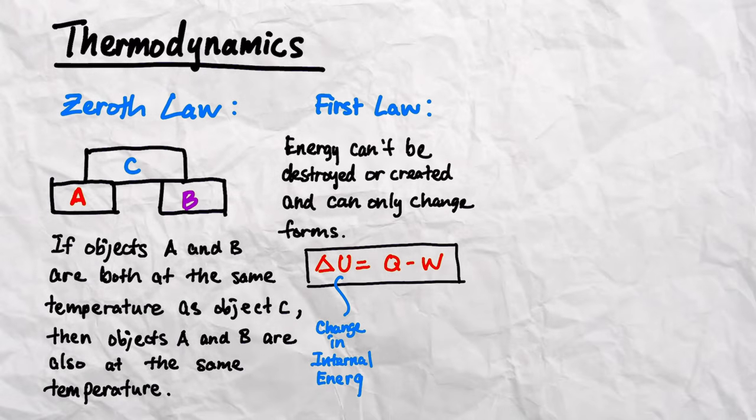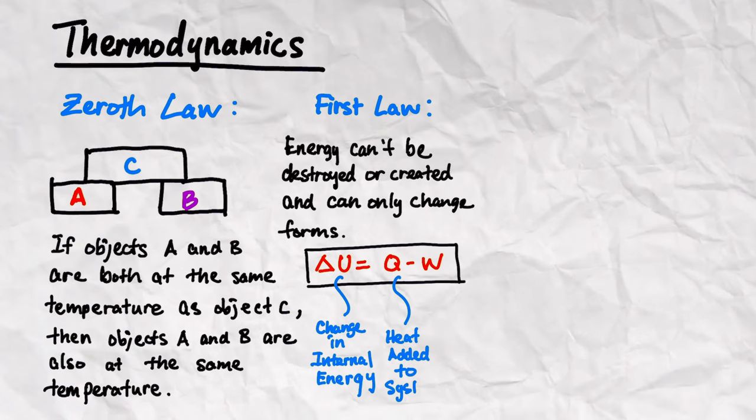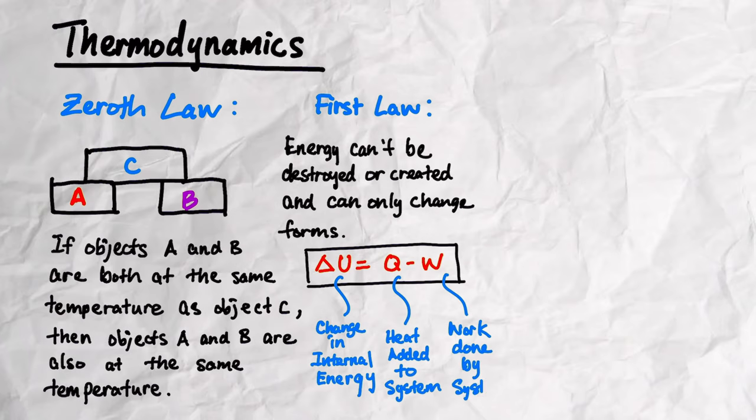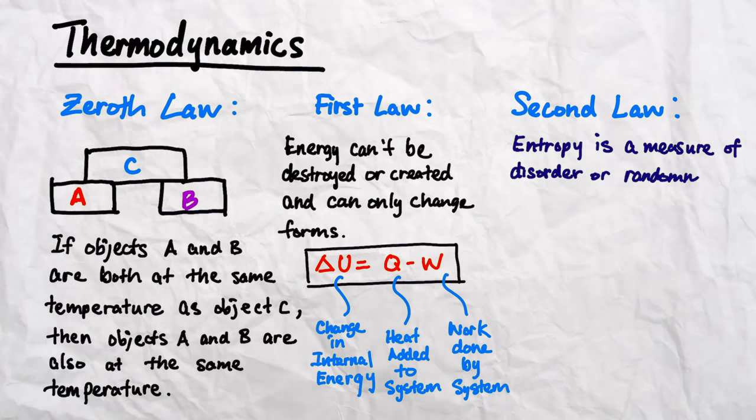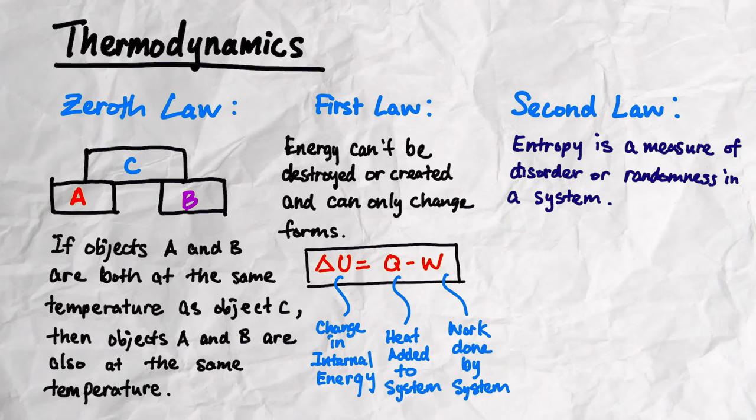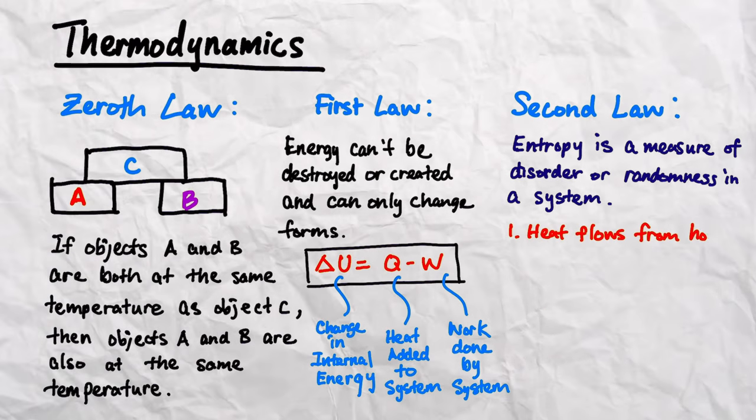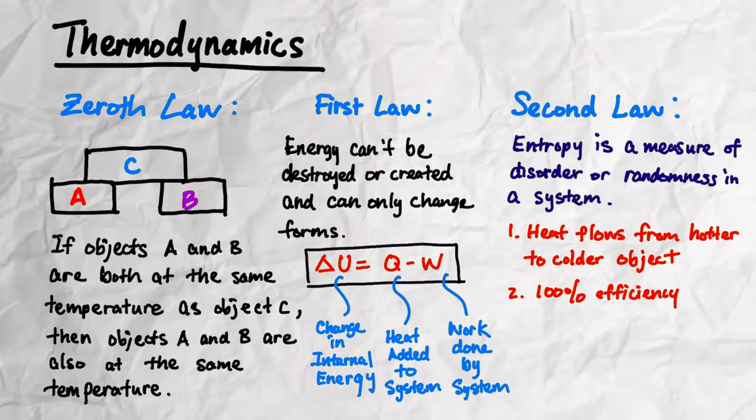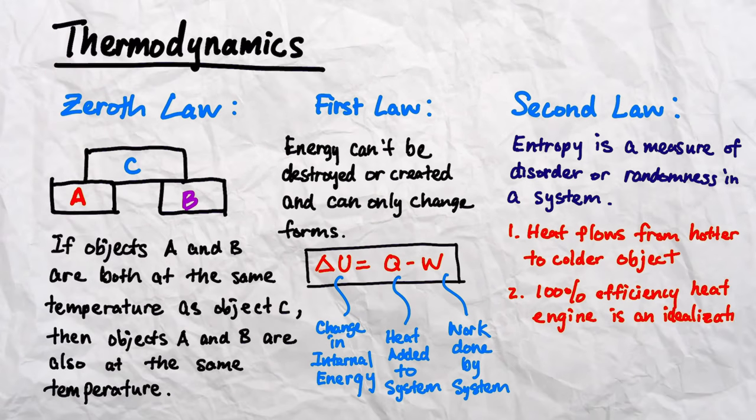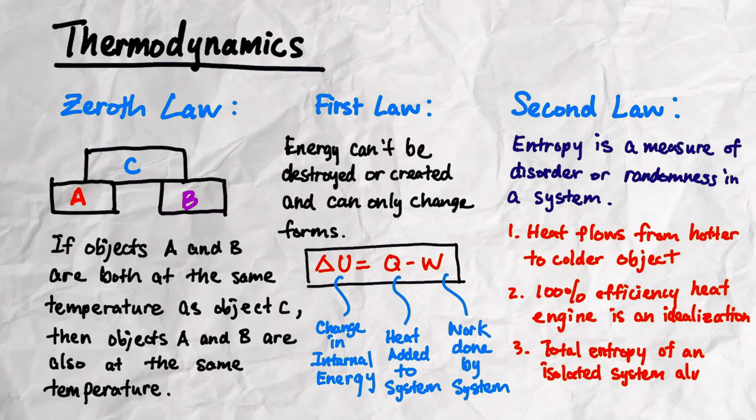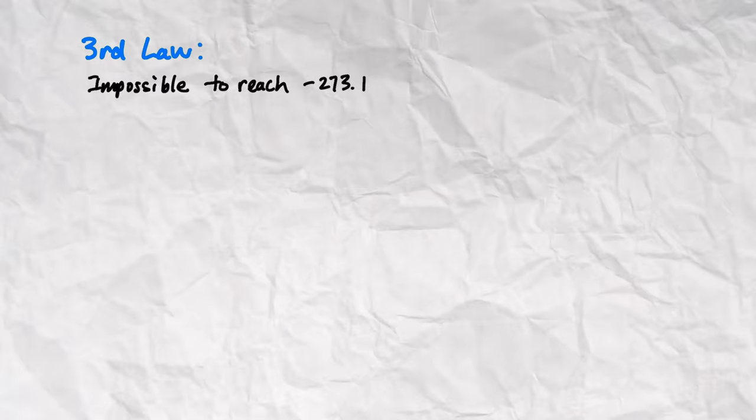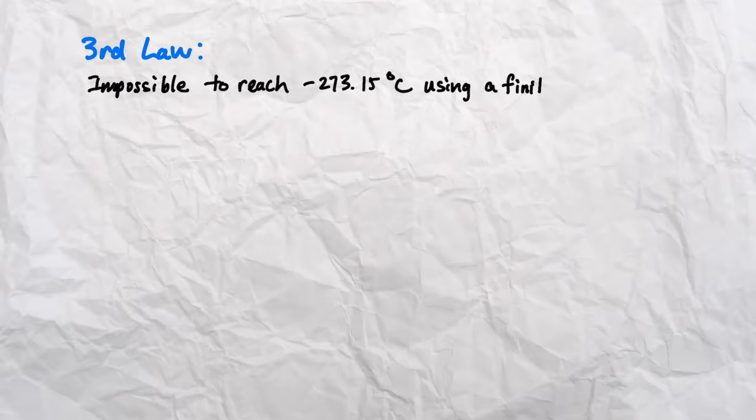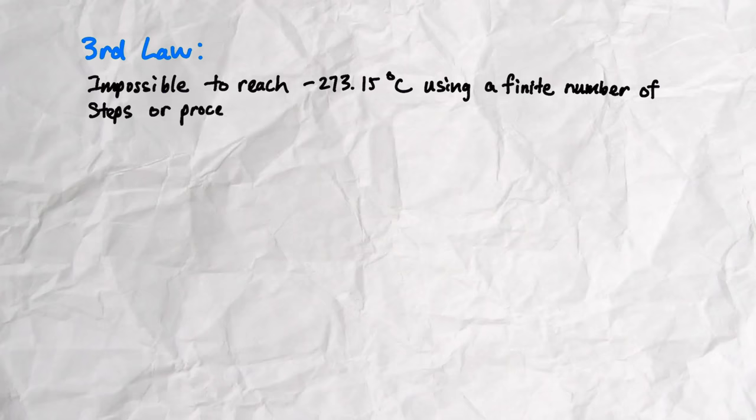The second law of thermodynamics introduces the concept of entropy, which is a measure of the disorder or randomness in the system, and says three things. The first is heat flows from a hotter to colder object. The second is it's impossible to create a heat engine with 100% efficiency. And the third is the total entropy of an isolated system always increases over time. Finally, the third law states that it's impossible to reach absolute zero or negative 273.15 degrees Celsius using a finite number of steps or processes.